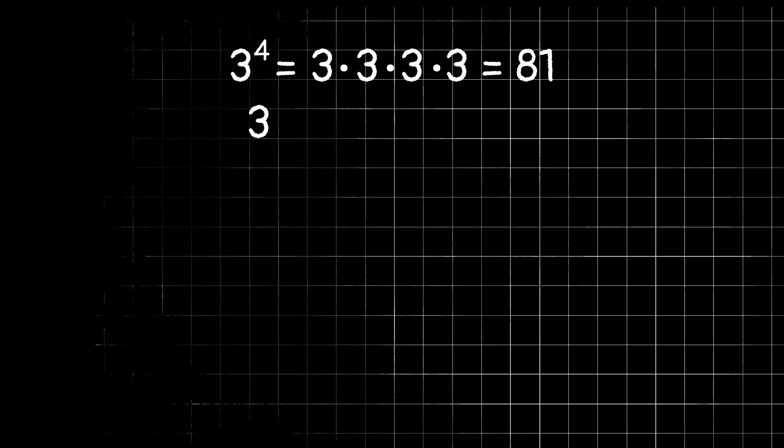First, I want to approach this by looking at patterns. Pick your favorite number — for me, I'm going to pick 3. Let's try out taking 3 to the power of some different numbers. For example, 3 to the 4th power is multiplying 3 by itself 4 times: 3 times 3 times 3 times 3, which gives us 81. Or we could have 3 to the 3rd power: 3 times 3 times 3, which is 27.